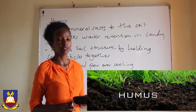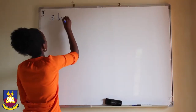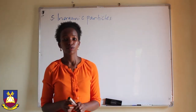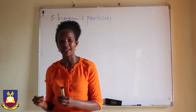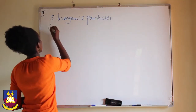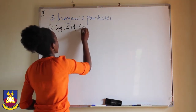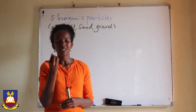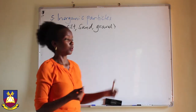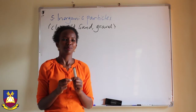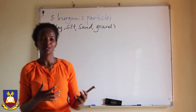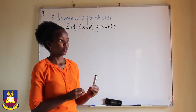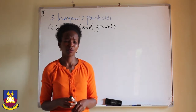The next component of soil is inorganic particles, which is actually the framework of the soil. They include silt, sand, clay, and gravel. These are listed in order of increasing size. Clay particles are very, very small. Silt is similar to sand but with very small particles. Sand is what we see at beaches. Gravel particles are much bigger than sand — almost like small stones, used sometimes in building.